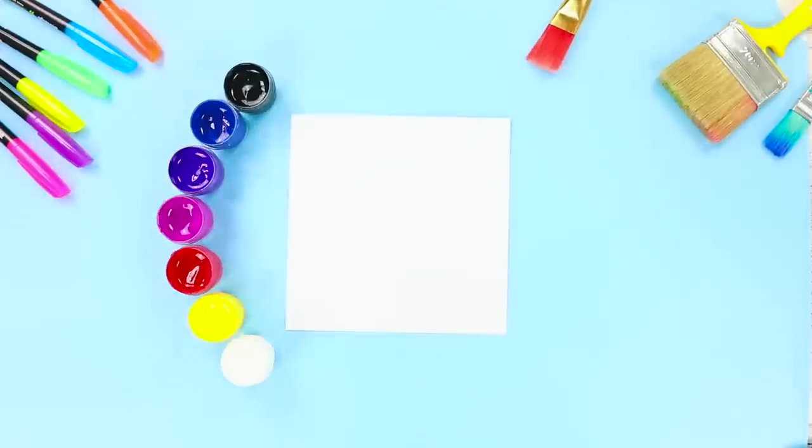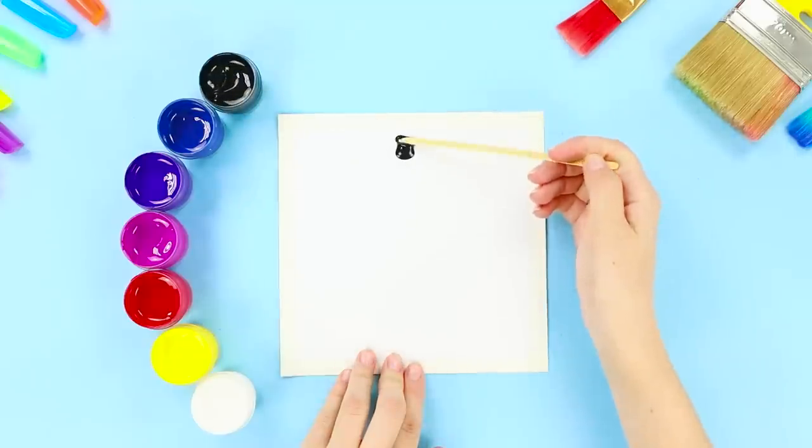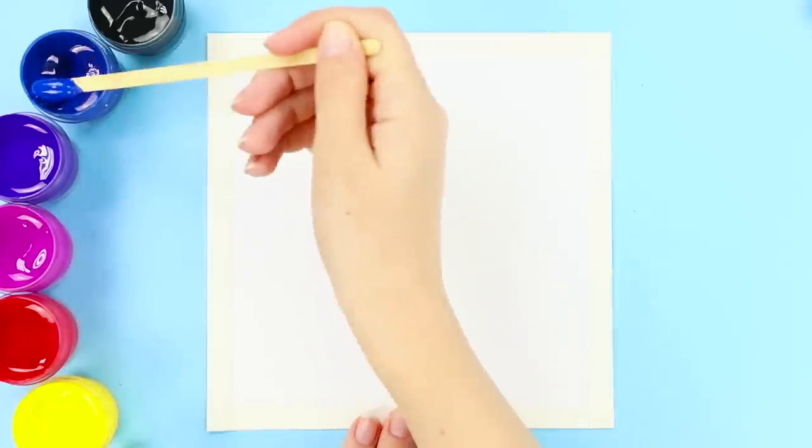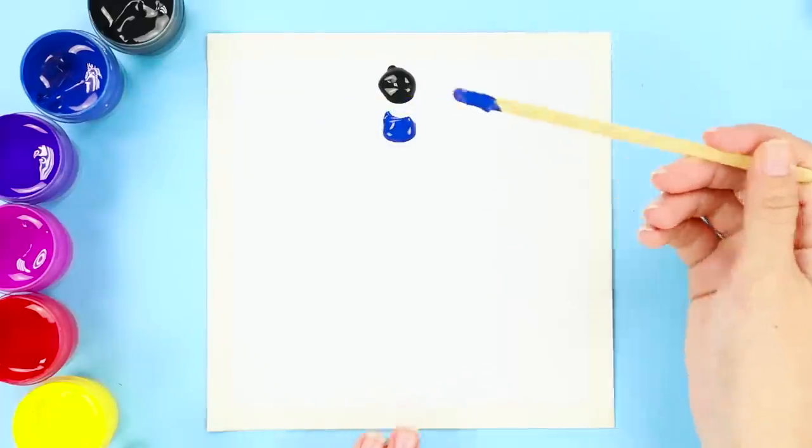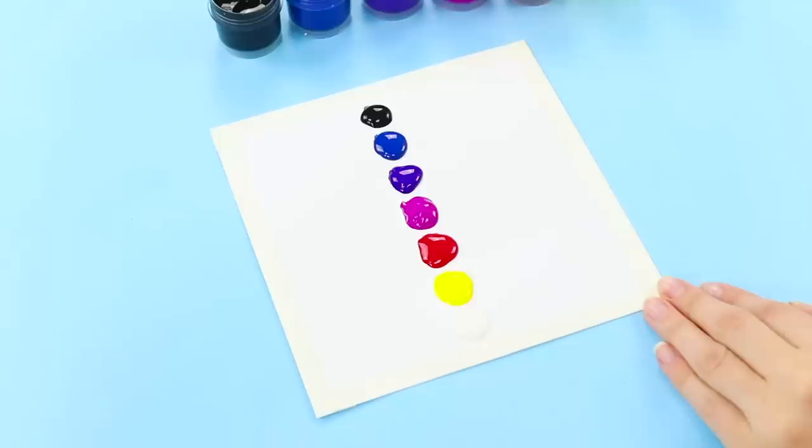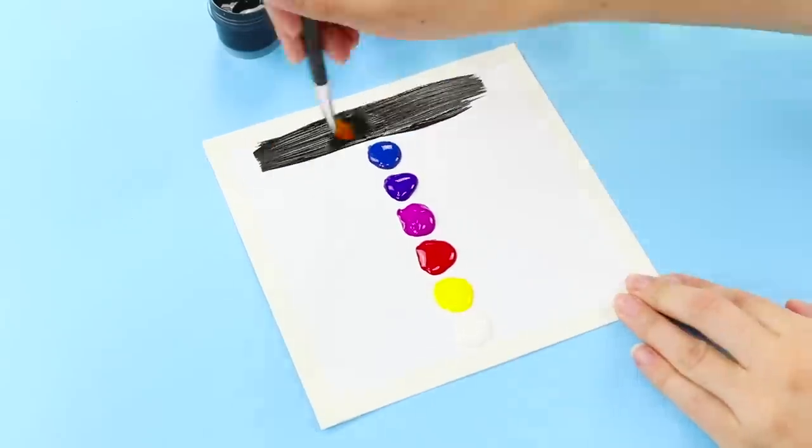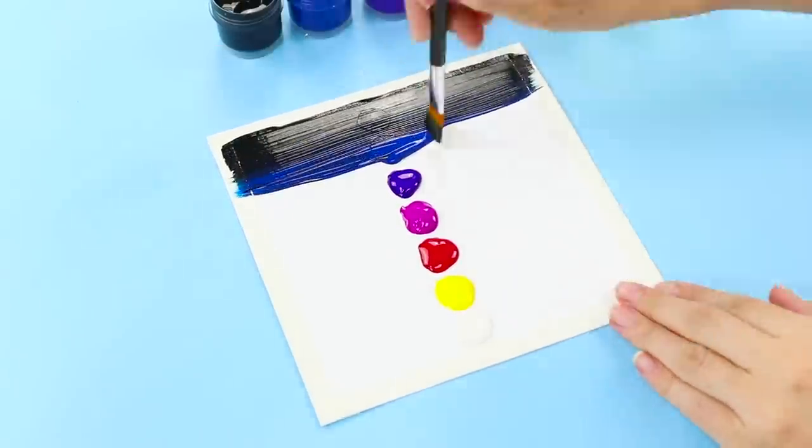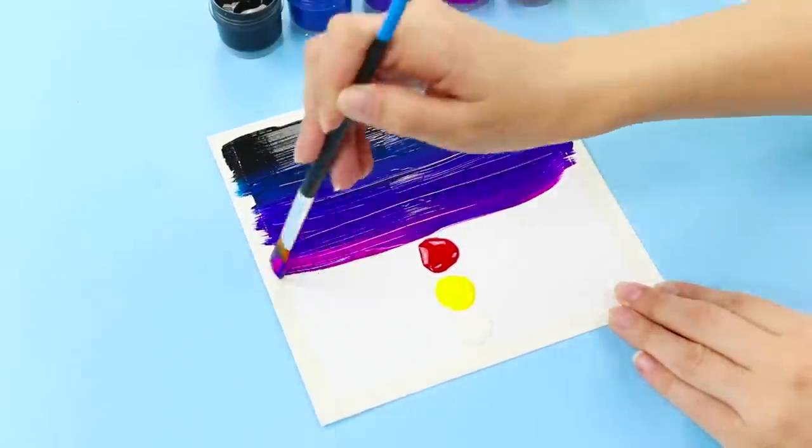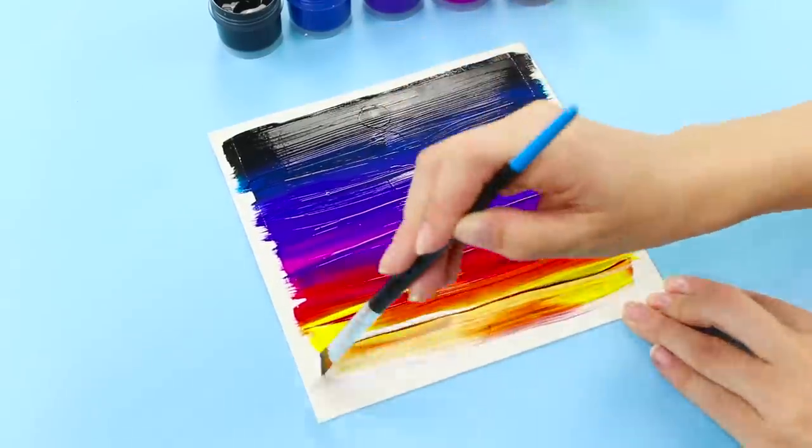For this idea, you will need gouache. Lay out a drop of each color on paper using a wooden stick. Like this, with dark shades at the top and light ones at the bottom. Next, use a wide brush to distribute the paint across the sheet. Apply strokes all over so the background is uniform.